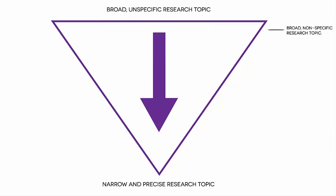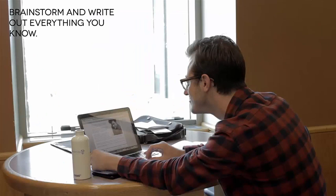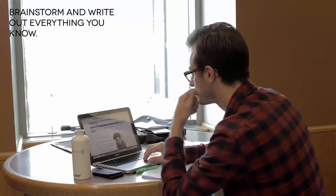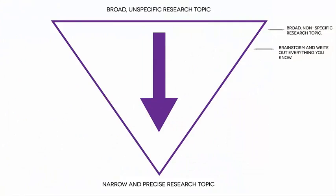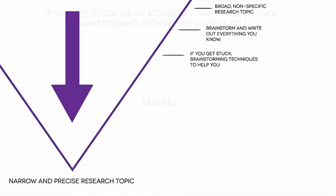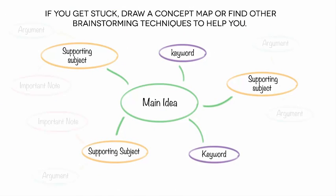How do you get from a rough topic to a thesis statement and then to a research question? First of all, brainstorm and write out everything you know about the topic. You can draw a concept map or use other techniques that will help you in this process.